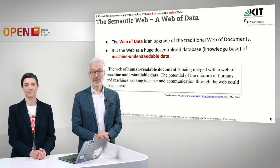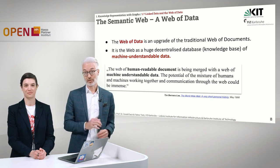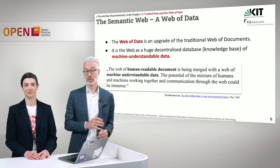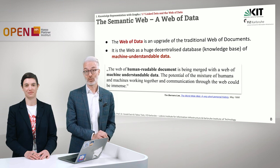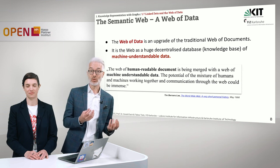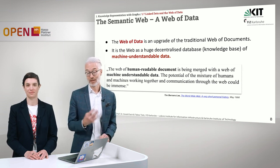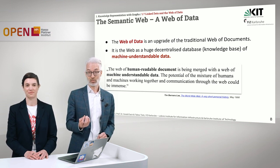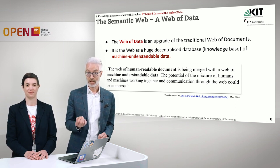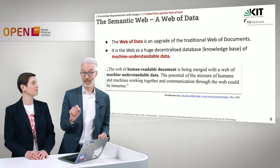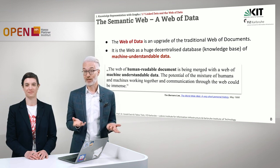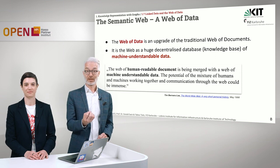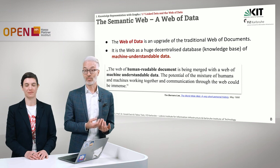So now let's define what the web of data is. The web of data is an upgrade of the traditional web of documents, because we do not only represent documents — we also have representation of completely different things from our real world. We have data sets, data structures, data resources. It's the web imagined as a huge decentralized database, or even a knowledge base, since we have ontologies as formal knowledge representations. And thereby it becomes machine-understandable data. Please distinguish machine-readable data from machine-understandable data. Every HTML page is machine-readable, since there is a parser which understands how to parse HTML. But machine-understandable really means the machine is able to correctly interpret the information given by the formal knowledge representation.